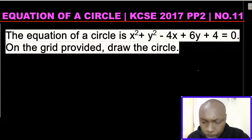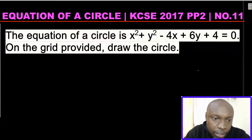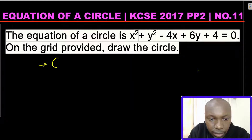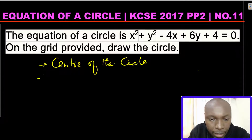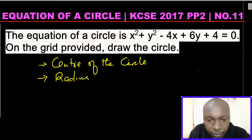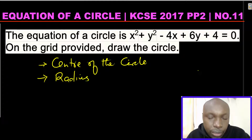Now, what are you supposed to do in this question? You need to ask yourself how do you draw the circle. To draw the circle you need two things: first, you need the center of the circle, and second, you need the radius. Once you obtain these two from the given equation, you'll be able to draw the circle.